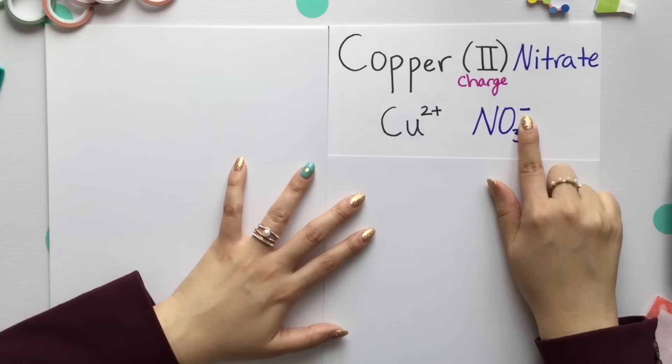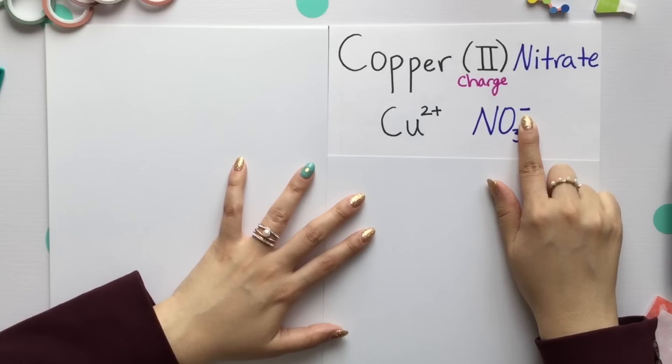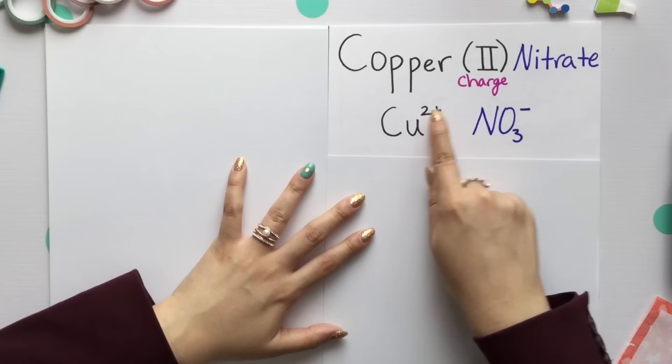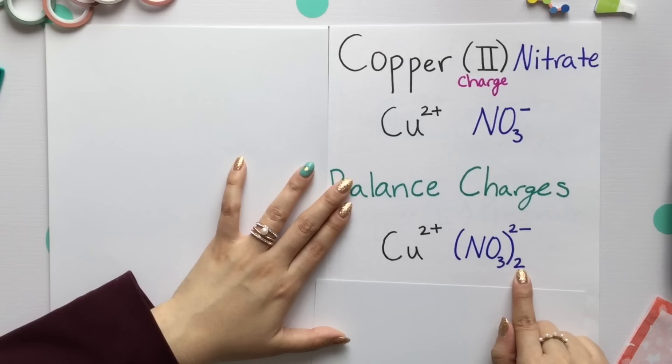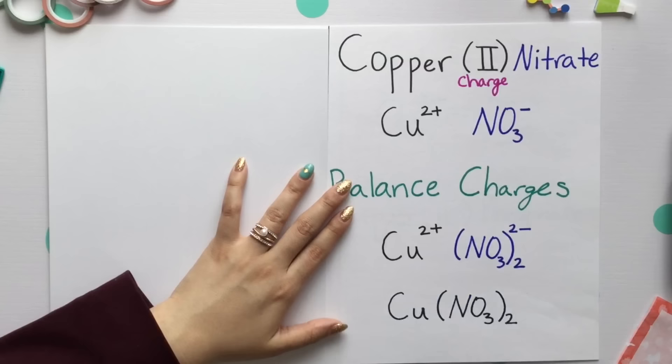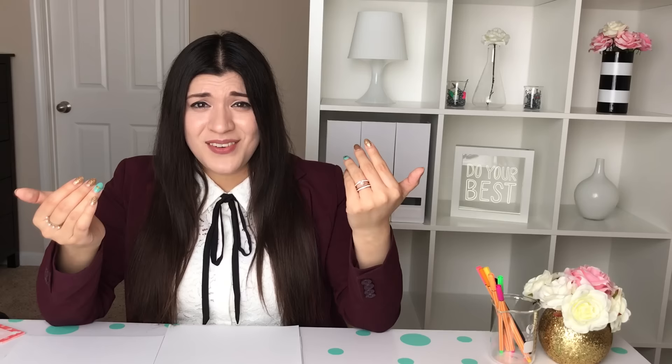Nitrate is NO3 and has a negative 1 charge. We saw that copper had that 2+ charge. All we need to do is have a 2 for our nitrate since copper is already 2. We'll place this in parentheses and place our 2 subscript outside. Your final compound is copper nitrate.